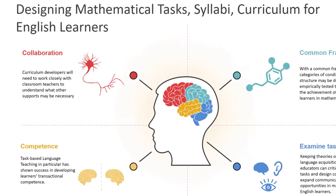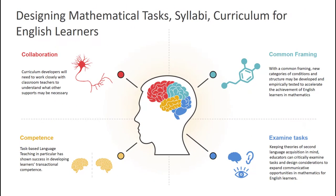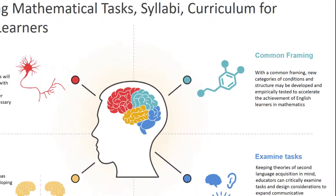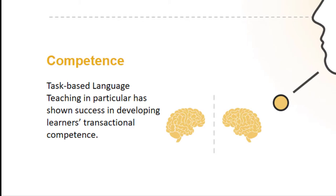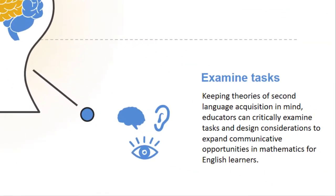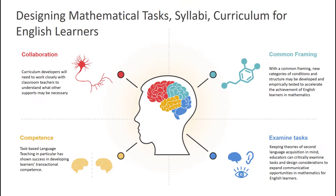Curriculum developers will need to work closely with classroom teachers to understand what other supports may be necessary. With a common framing, new categories of conditions and structure may be developed and empirically tested to accelerate the achievement of English learners in mathematics. Task-based language teaching in particular has shown success in developing learners' transactional competence. By keeping theories of second language acquisition in mind, educators can critically examine tasks and design considerations to expand communicative opportunities in mathematics for English learners.